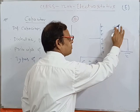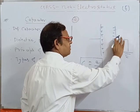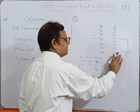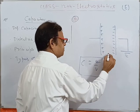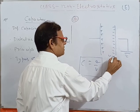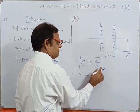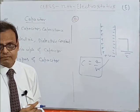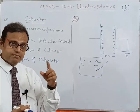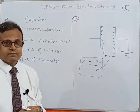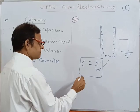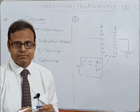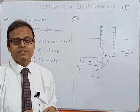So if we are earthing this plate, the positive charge will go to earth, and the potential difference between the plates gets decreased after earthing. And so C is increased. This is the principle of a capacitor.